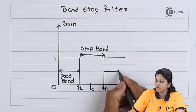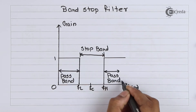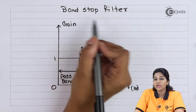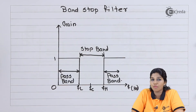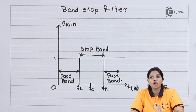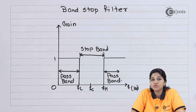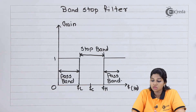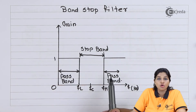Again, we will have a pass band above fh. In case of a band stop filter, we will have two pass bands and one stop band, which is always present between the two pass bands. Whereas in case of a band pass filter, we will have one pass band and two stop bands, with the pass band present between the two stop bands.